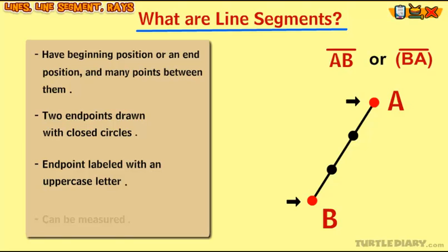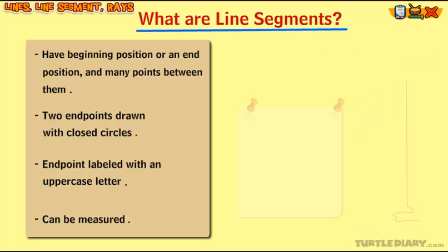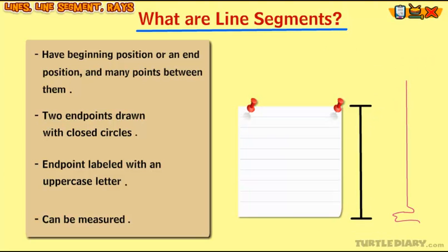Line segments are named based on their endpoint labels. Unlike lines, line segments can be measured. You simply measure from one point to the other. When you measure the length of a sheet of paper or a string, what you are measuring is a line segment.